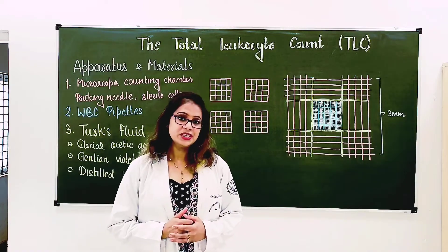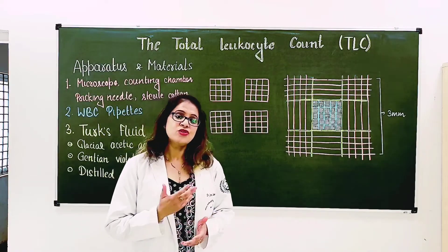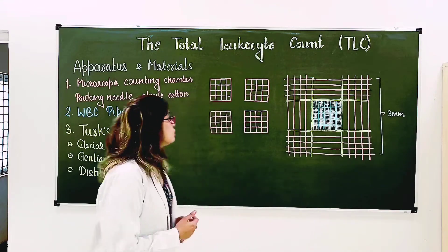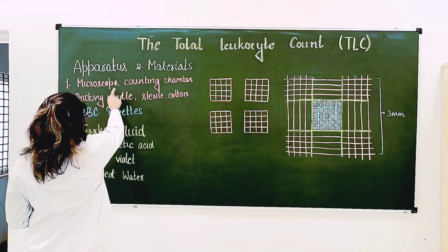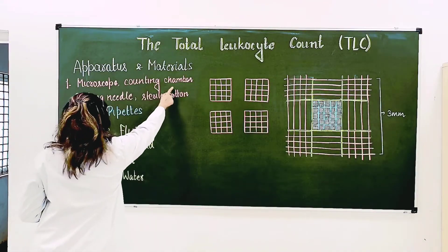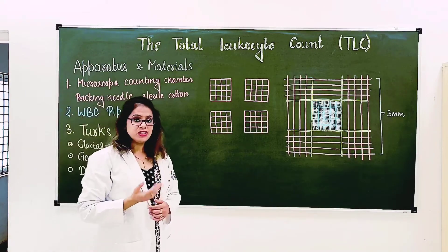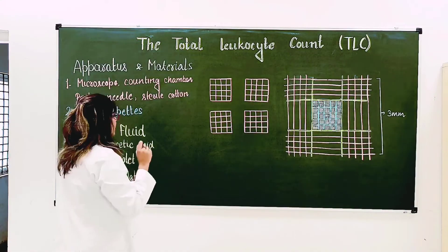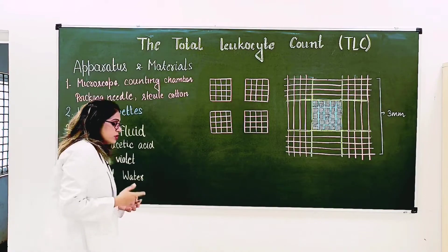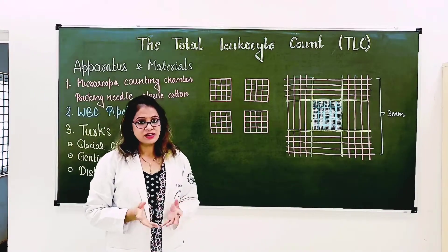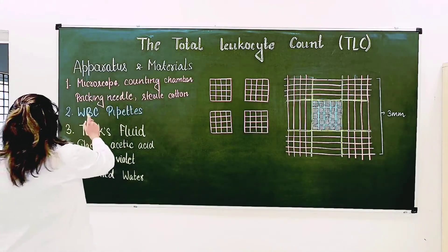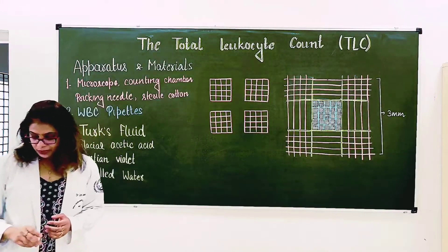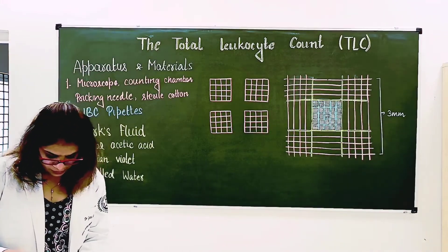So what do we need for the total leukocyte count? First of all, we need to know the apparatus and materials required for this practical. We need a microscope, a Neubauer counting chamber (which I have already described in a previous video), a pricking needle to collect blood, sterile cotton for asepsis, and a WBC pipette.